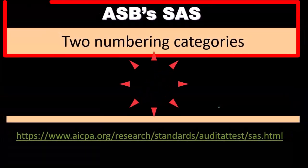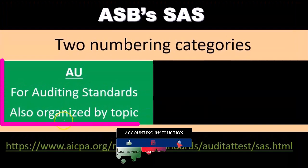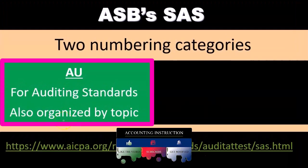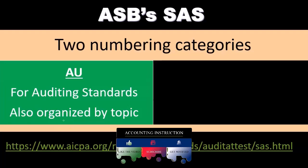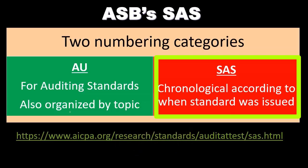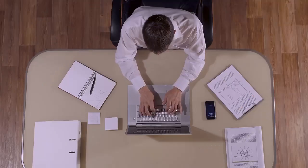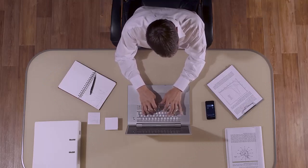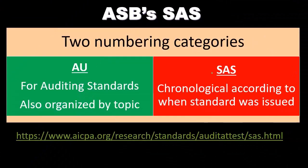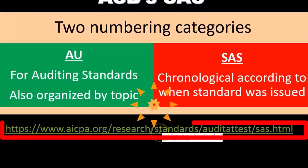The ASB's SAS have two numbering categories. They have the AU numbering category for auditing standards, organized by topic. Then there is the SAS numbering, organized chronologically according to when the standard was issued. The chronological ordering can be useful or informative because we can see what the thought process was over time. If you go to the provided link, you can access these standards on the website.